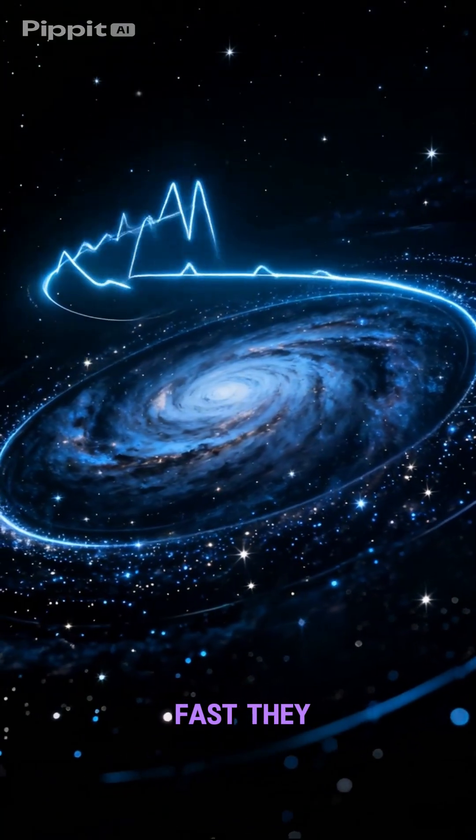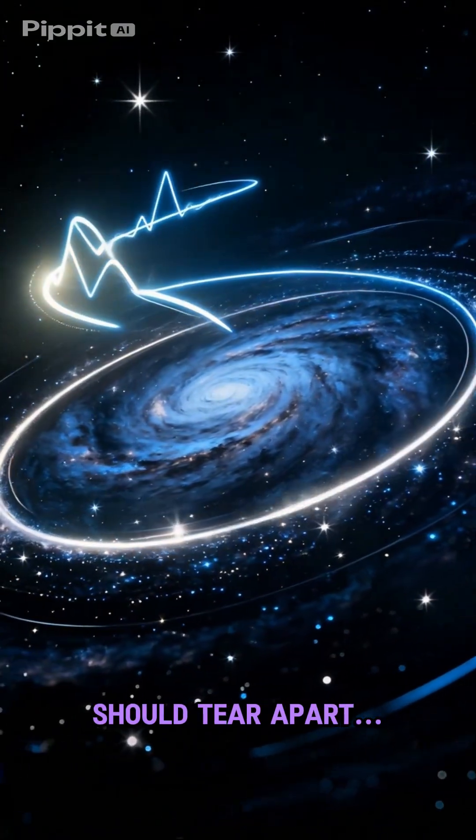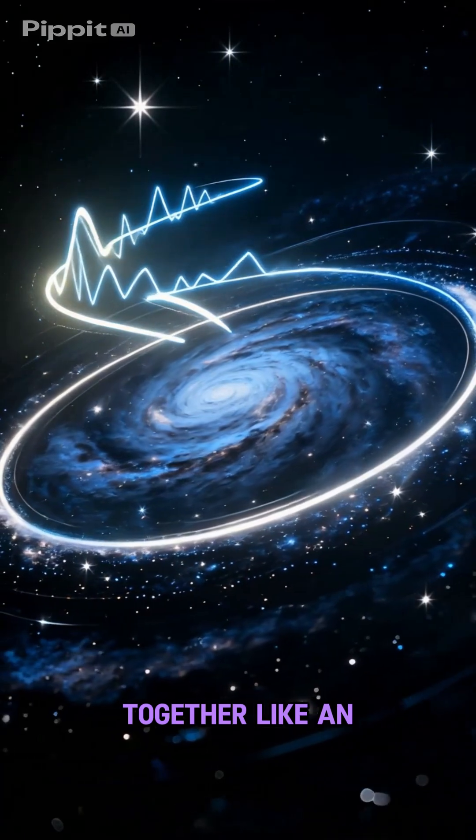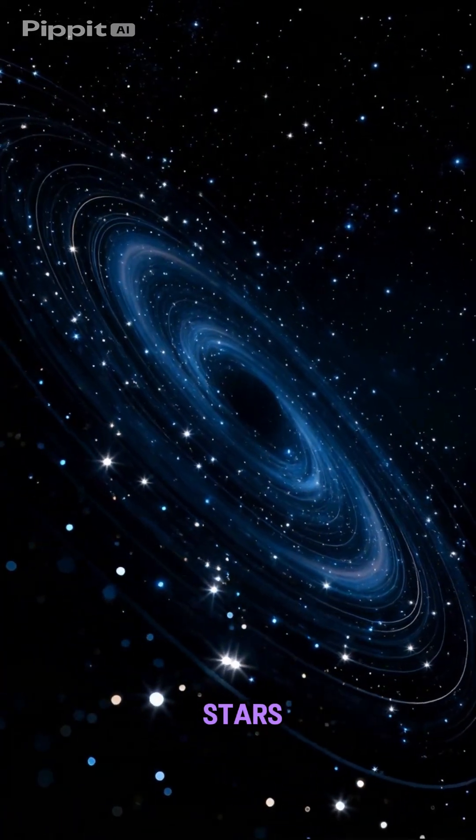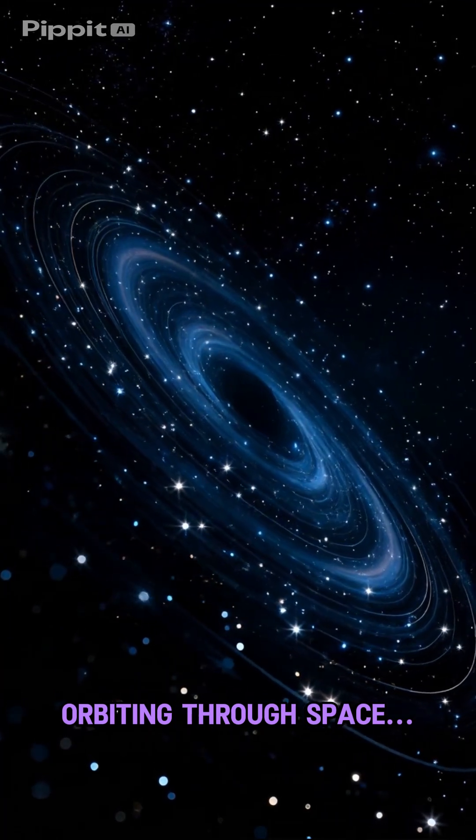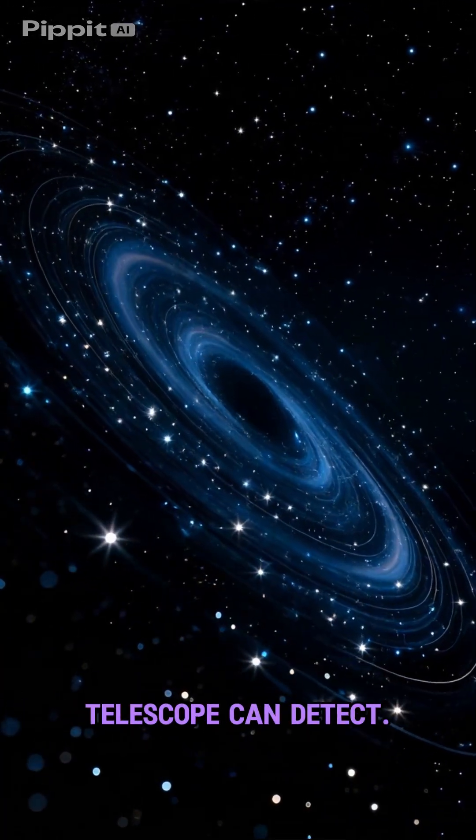Galaxies spin so fast they should tear apart, but dark matter holds them together like an invisible cosmic glue. Imagine billions of stars orbiting through space, all controlled by something no telescope can detect.